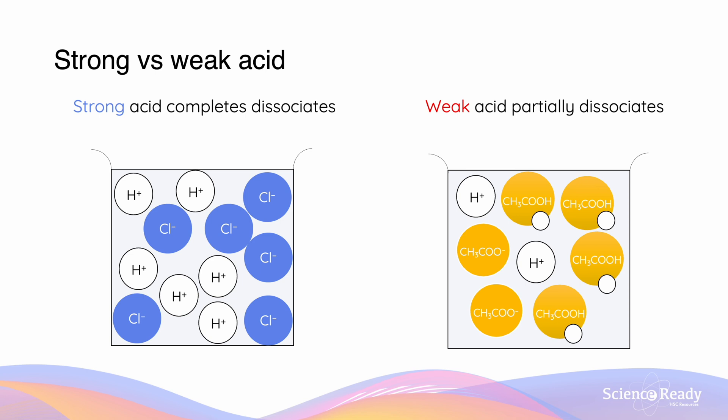In this video, we'll be looking at comparing acid strengths using pH and also conductivity. First things first, we should remind ourselves that strong acids are ones that completely dissociate, while a weak acid is one which only partially dissociates.